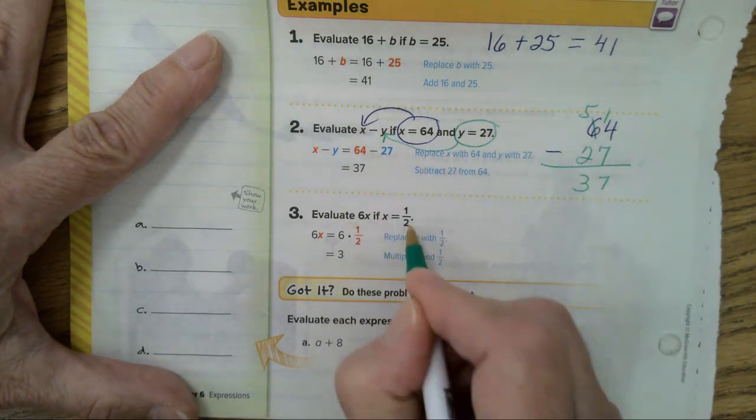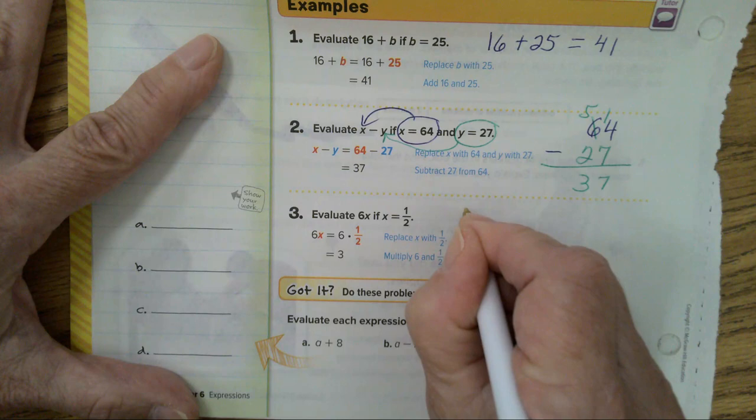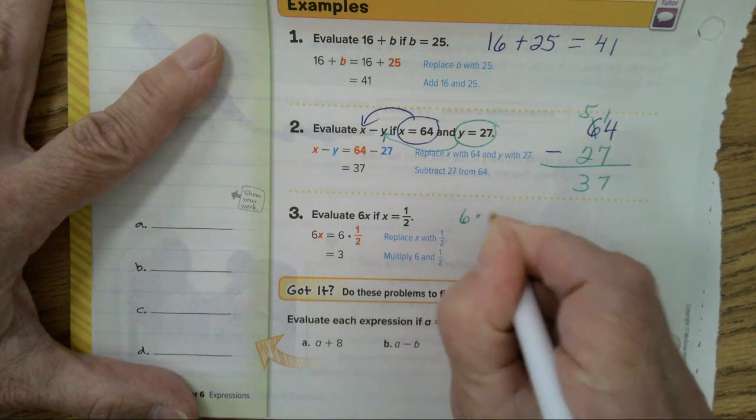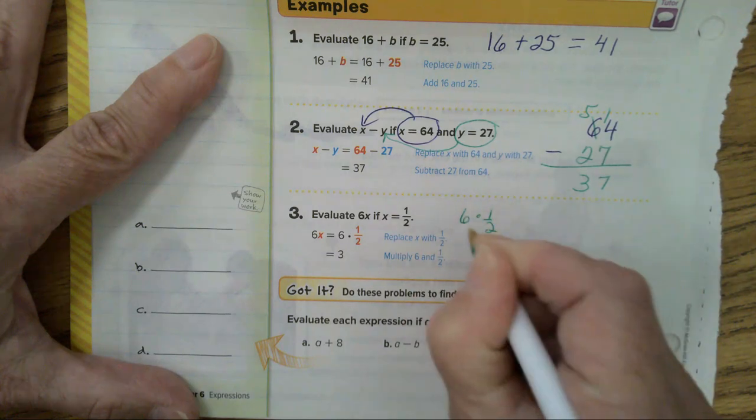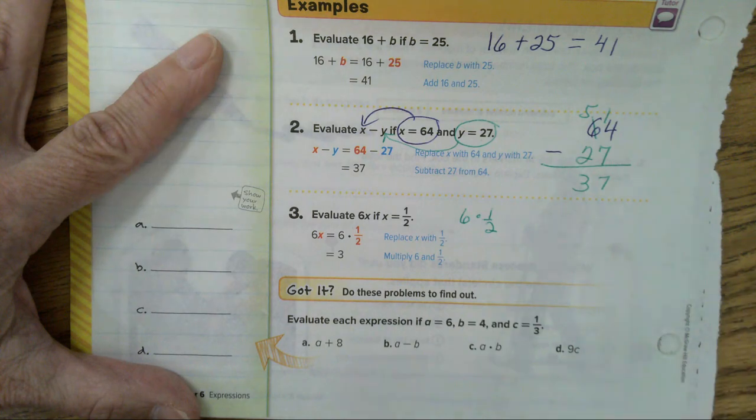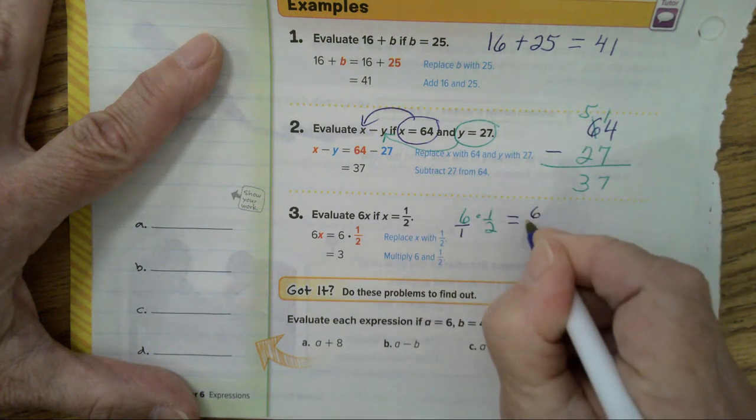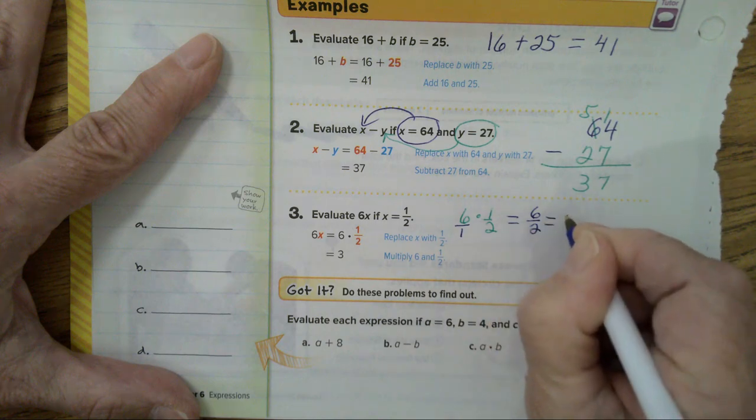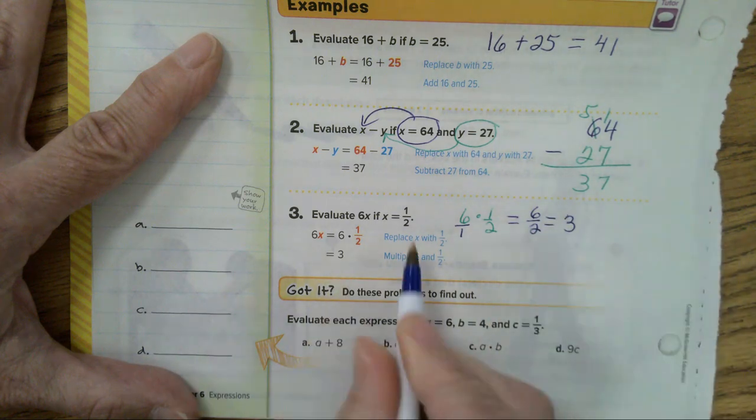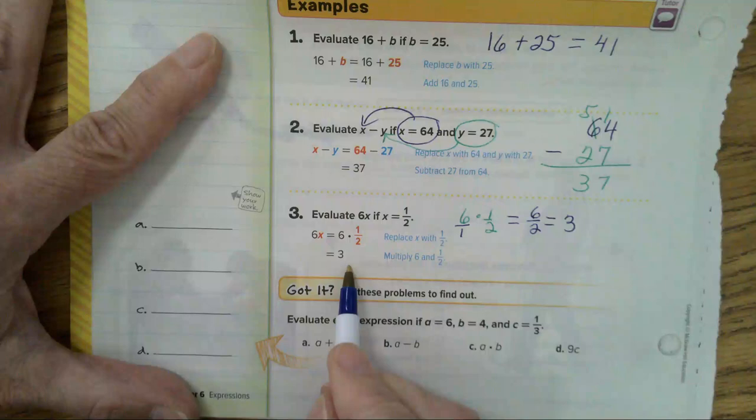In this problem, that says 6 times x. So, 6 times a half. 6, I'll use a dot this time, times one half. Gently pick the 6 up and put a 1 under it. When you multiply, you end up with 6 over 2. And that simplifies to 3. So, 6 times a half is 3. Any questions?